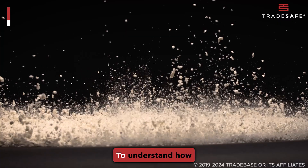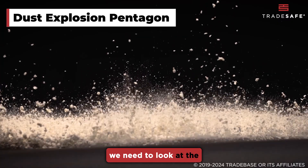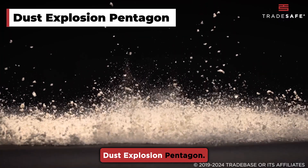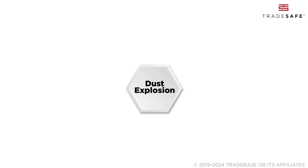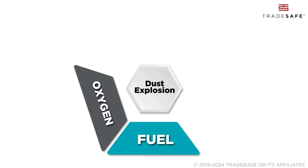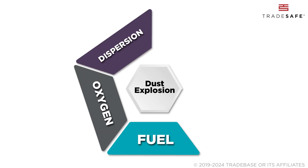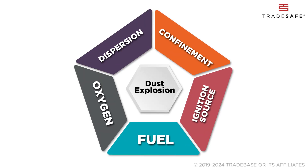To understand how dust explosions occur, we need to look at the Dust Explosion Pentagon. This includes five elements: fuel, oxygen, dispersion, confinement, and an ignition source. Let's break these down one by one.